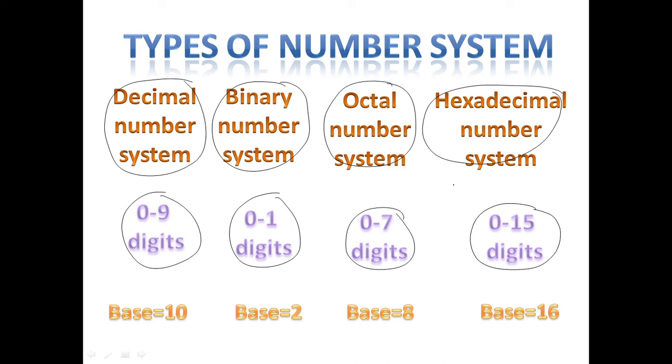For zero to nine we use numbers, and for 10 to 15 we will use alphabets. Like 10 is represented as A, 11 as B, 12 as C, 13 as D, 14 as E, and 15 as F.